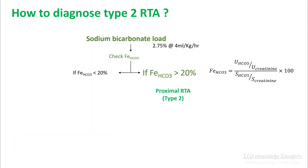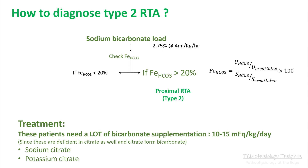How do you diagnose type 2 RTA? Give them a sodium bicarb load — if fractional excretion of bicarb is more than 20%, you are dealing with proximal RTA. Treatment includes significant bicarb supplementation, around 10 to 15 mEq per kg per day. Since these patients are also deficient in citrate, give them potassium citrate if they are hypokalemic.